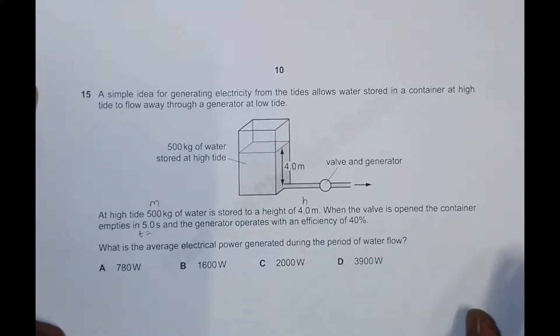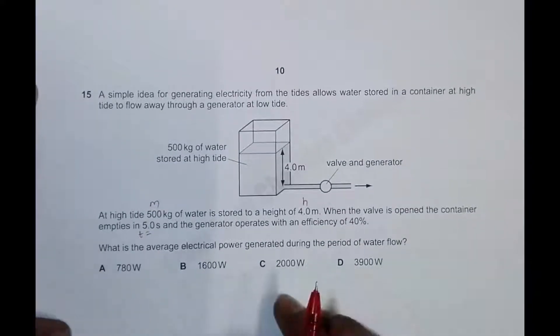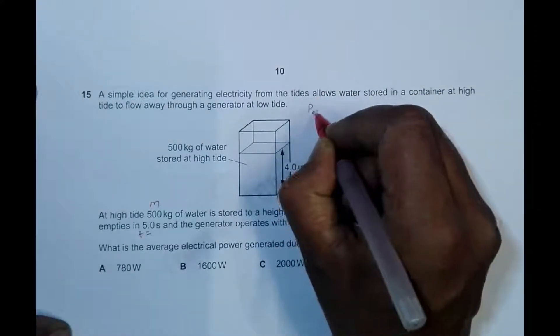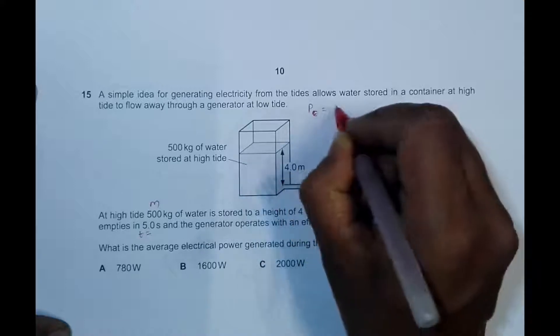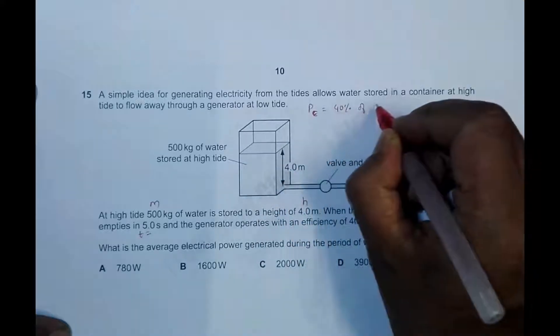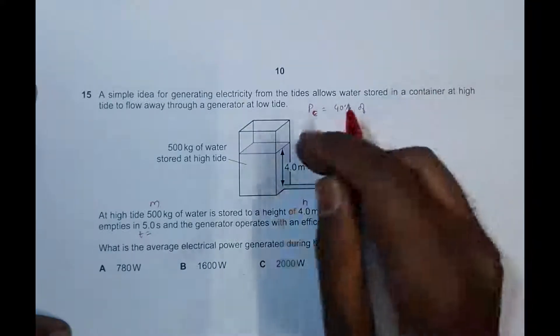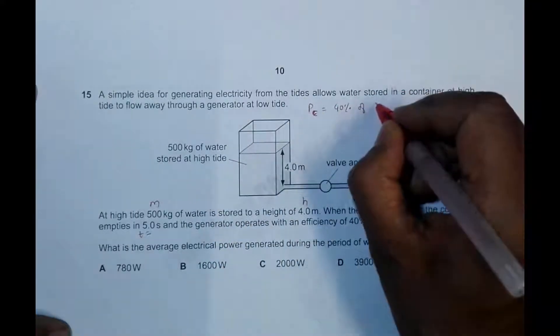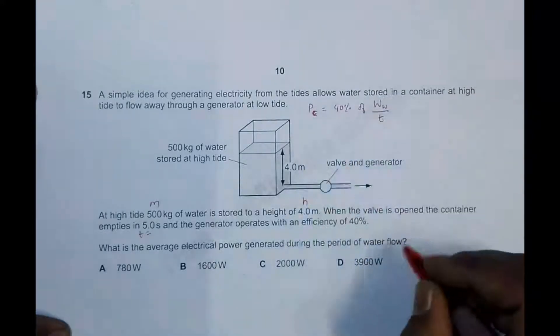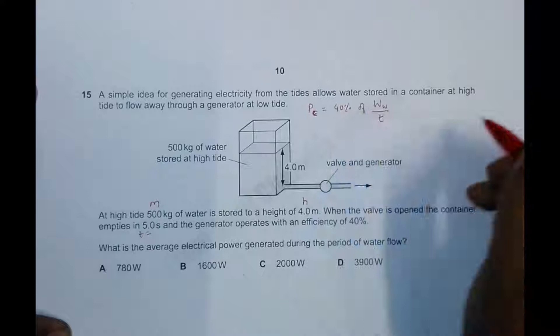You have to find the average electrical power. Let's first remember that the electric power is equal to 40% of the power present in water. Power is the work that the water can do divided by time, so the rate of work done.